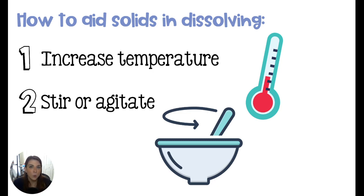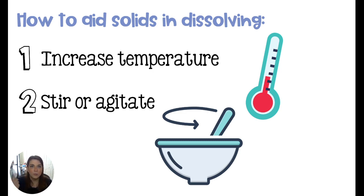We can help solids dissolve in water by increasing the temperature of the water. What happens is that those water molecules are now moving faster, so the solid can find little pockets to dissolve. We can also stir the water or agitate it, which will help to move water molecules out of the way for the solid particles to wiggle in between and dissolve.